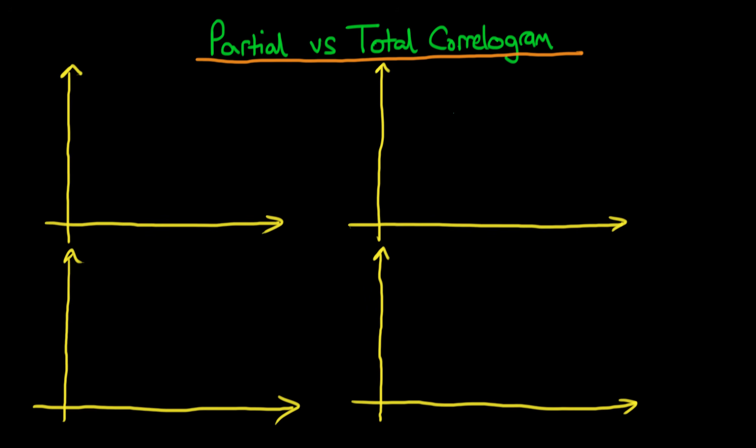In this video I'm going to explain the difference between partial and total correlograms and how they can both be useful in diagnosing what type of time series process we have present.